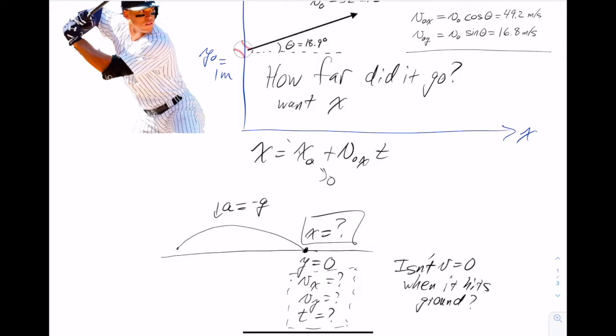The projectile motion describes the motion of the ball while it's in the air. So if you wanted to know what's the velocity of the ball when it hits the ground, what you're really asking is how fast is it going just before it hits the ground? Once it hits the ground, there's different physics going on. We don't know how to describe that.